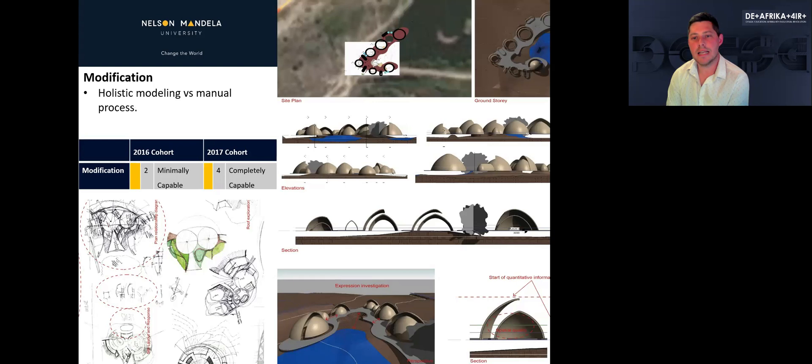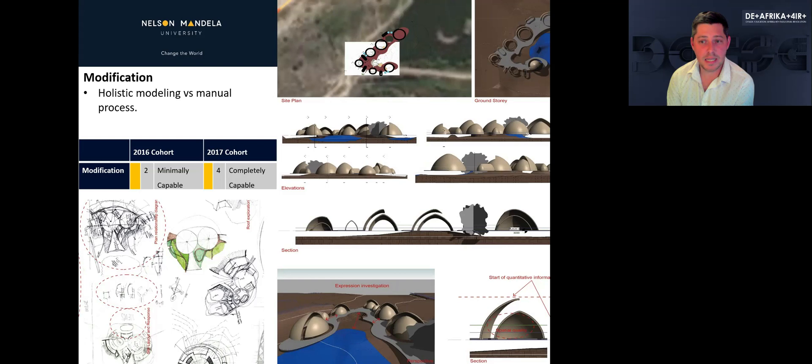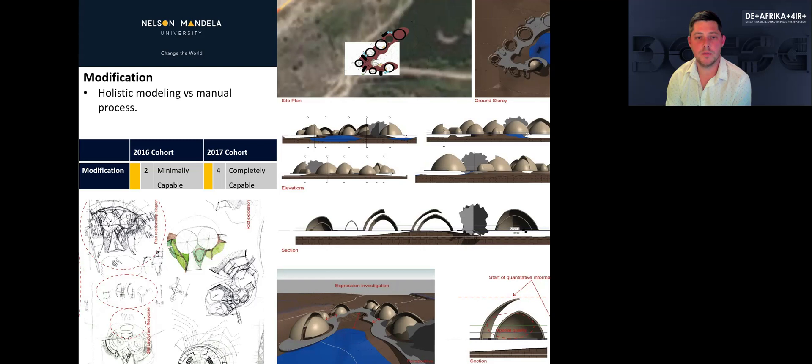Modification can be regarded as the extent to which the design can be modified and explored. The BIM cohort uses a holistic approach to modeling, which allows different views to be updated simultaneously. Making changes are quick, and attending the next critique session was achievable. The conventional method uses a manual, painstakingly slow process, and in many cases redrawing content such as contours or site information took so long that students didn't get to the point of making changes to explore design opportunities towards the next critique session.